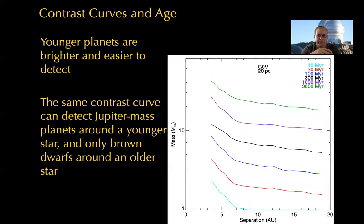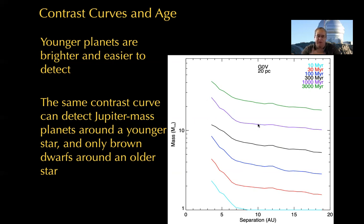Age is very important here. On a log scale from 1 to 13 Jupiter masses for planets and 13 to 80 for brown dwarfs, making stars older means planets get fainter. For a very young 10 million year old target star, you're sensitive down to 1 Jupiter mass or below close to the star. As the star gets older — 30 million years, 100 million years — you become less sensitive to lower mass planets. At a billion years, with this contrast curve, you barely hit 10 Jupiter masses. At 3 billion years, you're sensitive to brown dwarfs but not planets at all. So you want the youngest stars if you want your contrast curve to reach planetary masses.